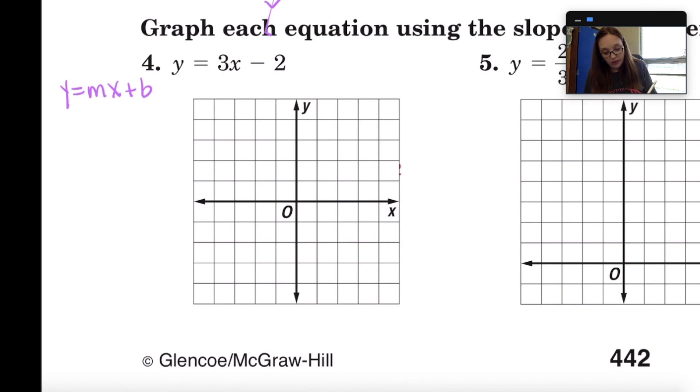So in this case we've got a three in place of m and then we've got a negative two where the b should be. So that means that my slope is three and my y-intercept is negative two.